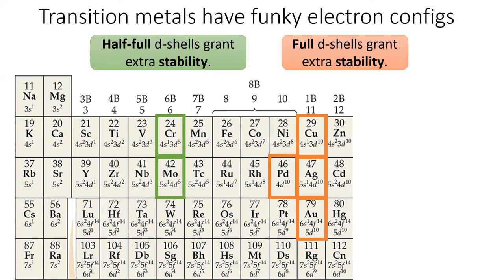Also, having a completely full d subshell grants extra stability. Copper, palladium, silver, and gold all steal electrons from their s subshell to completely fulfill their d subshell. You may recognize these elements as the coinage metals because they have extra chemical stability due to having a full d subshell.